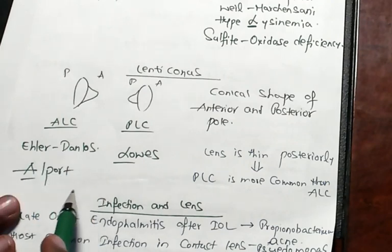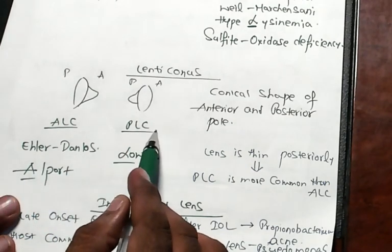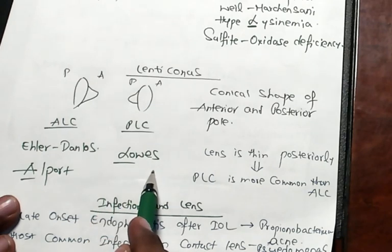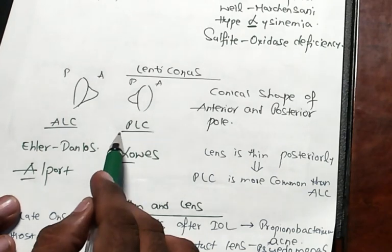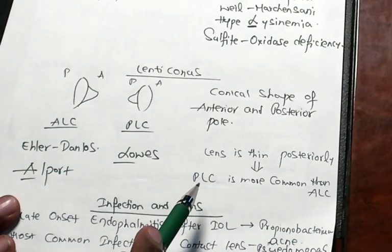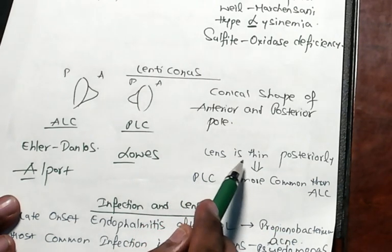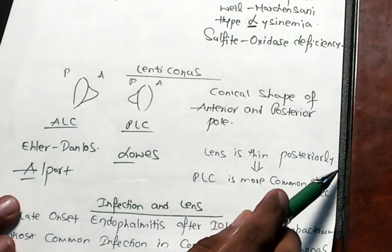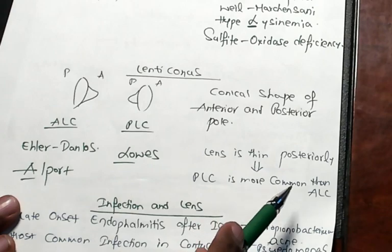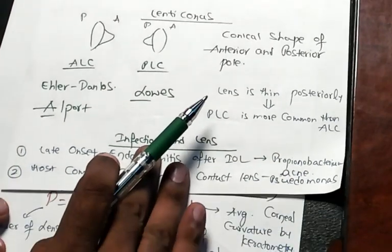Posterior lenticonus is there in Lowe's syndrome. And why is posterior lenticonus more common than anterior lenticonus? Because lens naturally is thinner in the posterior pole. Posterior lenticonus is more common than anterior lenticonus.